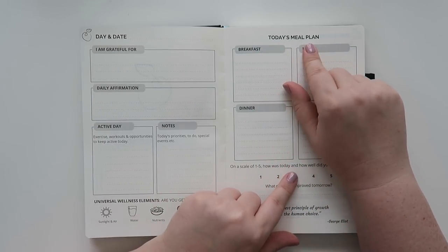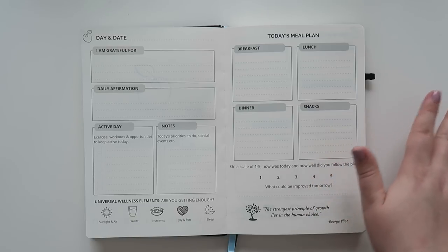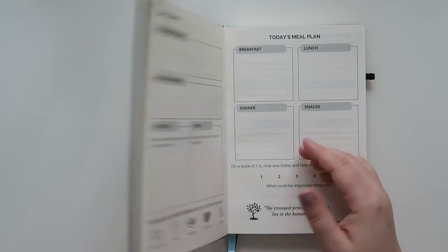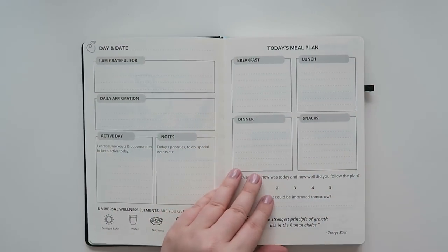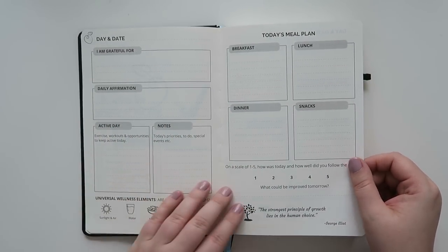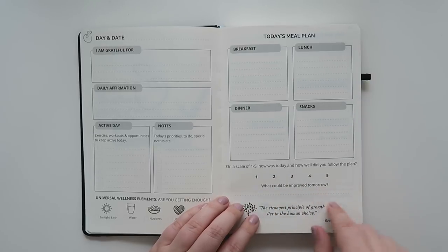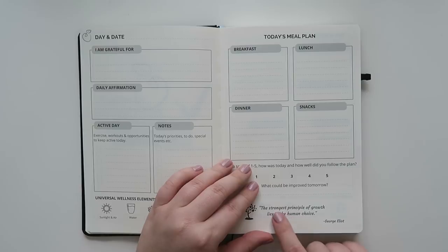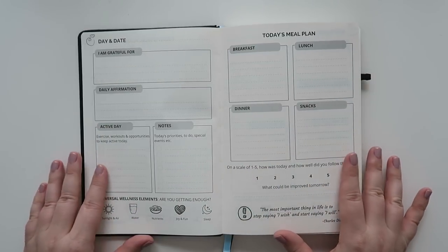All right. So over into the right-hand side over here, it says today's meal plan. And then it has breakfast and some lines, lunch, dinner, and snacks. So you can either plan that ahead, or you can even just write it in as it happens. This is small enough that it would definitely fit in, I think most people's purses. Let me see if I can find the size on the interwebs here. All right. So this is five and a half inches by eight inches. So yeah, I mean, you could definitely throw this in your bag or your work bag, or keep it on your desk at work, or just keep it at home too. I mean, it's definitely small enough where it could suit those needs. And it says on the scale of one to five, how was today and how well did you follow the plan? And it's one through five. And it just says, what could be improved tomorrow? And then it's got like a little quote from George Elliott and says, the strongest principle of growth lies in the human choice. Isn't that the truth? Gosh, it's getting deep on the FDE channel today.